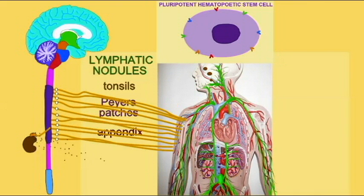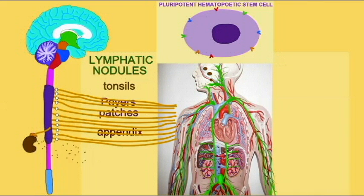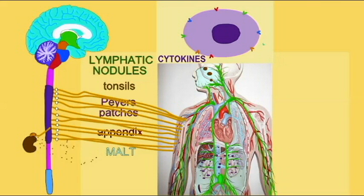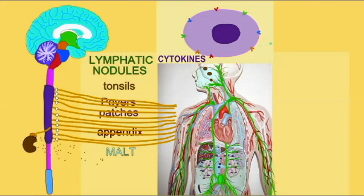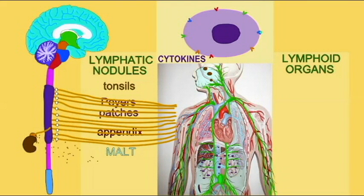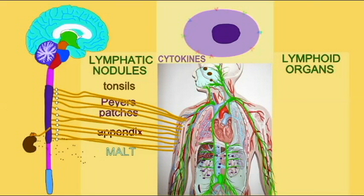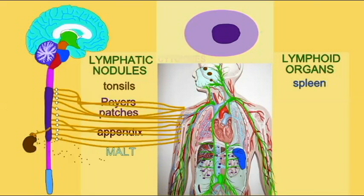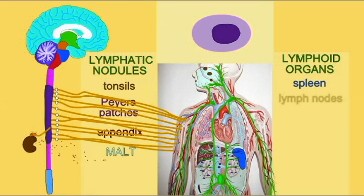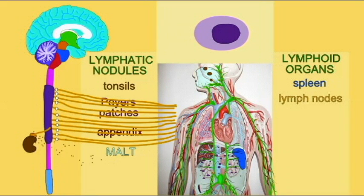This occurs in the bone marrow, where sympathetic stimulation can affect differentiation and egress of bone marrow cells into the blood. It also occurs in the thymus, where this affects differentiation of T-cells and thymocyte number.